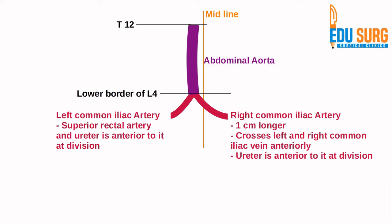The right common iliac artery crosses both the left and right common iliac vein — the artery is anterior to these veins. The ureter is anterior to the artery at the division of the common iliac artery at the sacroiliac joint. These are very commonly asked questions, and this is the area where you identify the ureter during pelvic surgeries.